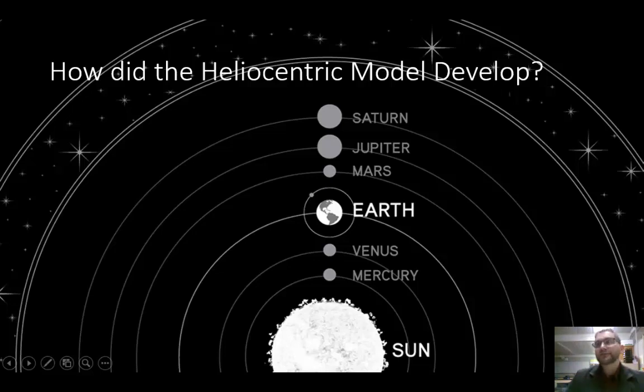So how did the heliocentric model develop? Not everybody believed in the geocentric system. An ancient Greek scientist named Aristarchus developed a Sun-centered model called a heliocentric system. Helios is the Greek word for Sun. So in a heliocentric system, Earth and the other planets revolved around the Sun. This model was not well received in ancient times because people could not accept that Earth was not the center of the solar system. In fact, they thought Earth was the entire center of the universe.